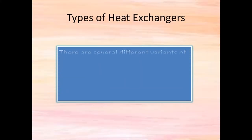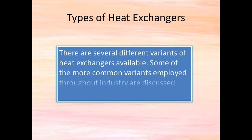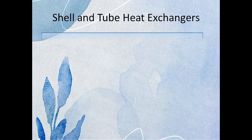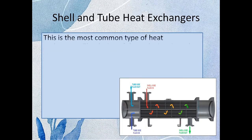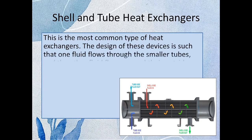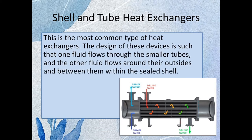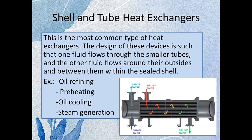Types of heat exchangers. There are several different varieties of heat exchangers available. The most common are discussed further. First is shell and tube heat exchanger, in which one fluid flows through small tubes and the other flows around it within a sealed shell. Examples include oil refining, preheating, oil cooling, and steam generation.